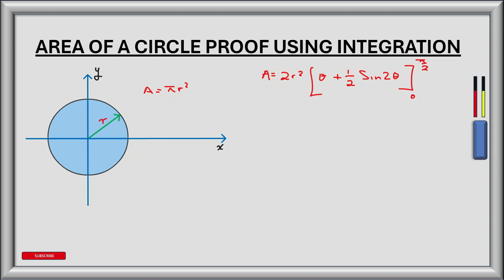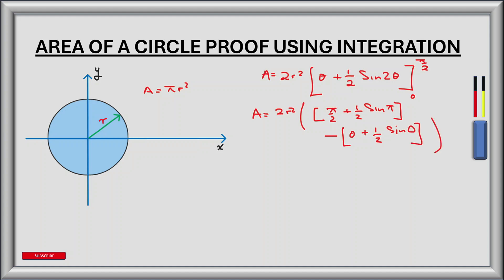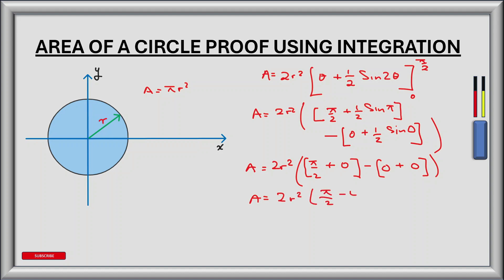So if we now evaluate this from 0 to pi by 2, we have our area equal to 2r squared times: substituting pi by 2 in, we get pi by 2 plus a half times sin of pi — and substituting 0 in, we get 0 plus a half sin of 0. Now sin of pi is 0, and sin of 0 is 0, so those terms vanish. That leaves us with the area equal to 2r squared times pi by 2, and the 2's cancel out, giving area equals pi r squared.